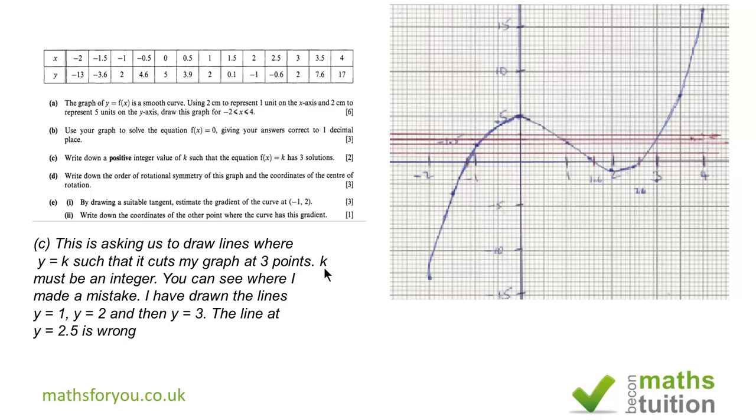For part D, it's asking us to find the center of rotation for this graph. Now, what I've done is I've looked at the maximum and the minimum points. The maximum point occurs at (0,5) and the minimum point occurs at (2,-1). So to find the center of rotation, that's going to be halfway between the maximum and the minimum point.